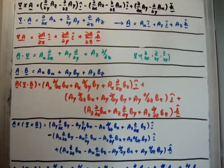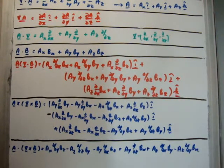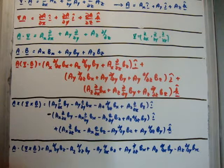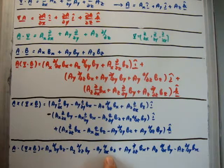And finally, if we take the divergence of the curl — we're taking the dot product between the vector field A and the vector field produced by the cross product, or the curl of B. This gives us six terms. They're there for completeness.